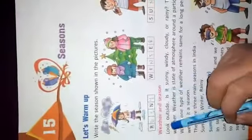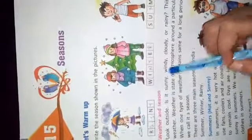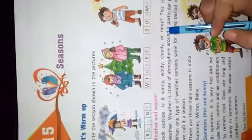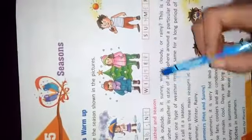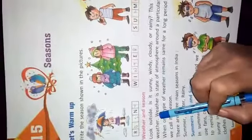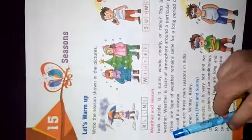Weather and season. Look outside — is it sunny, windy, cloudy, or rainy? When you look outside your house and see the clouds, the atmosphere is either sunny, windy, cloudy, or rainy. This is called weather. Weather is a state of atmosphere around a particular place.